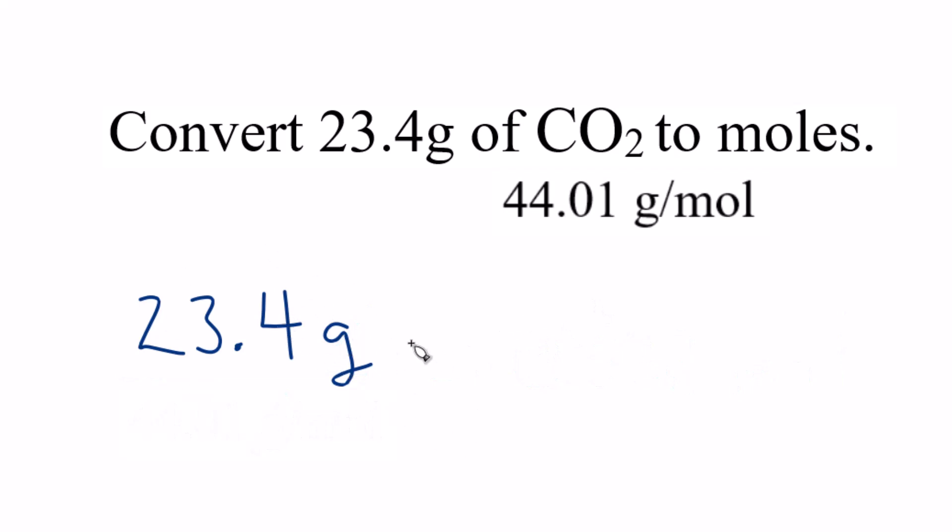We take our grams and multiply that by a conversion factor. We know we have grams here, so we want grams on the bottom so they cancel out, just like last time. That means we'll have moles on the top. And from the molar mass, we know that we have 44.01 grams for one mole of CO2.